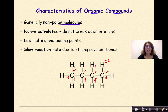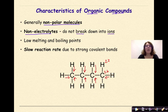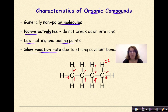Organic compounds are also classified as non-electrolytes. In other words, they're not going to break down into ions. So again, looking at the image below, this is not going to break down into a positive ion and a negative ion. Organic compounds typically have low melting and boiling points, and they have a slow reaction rate due to the strong covalent bonds that hold the molecules together.